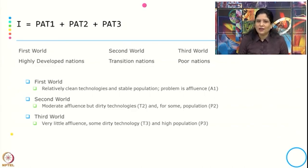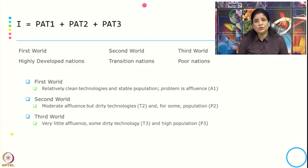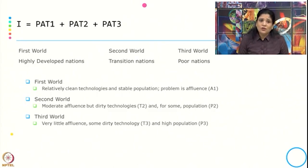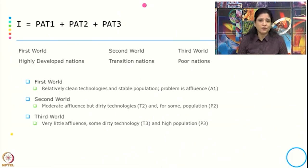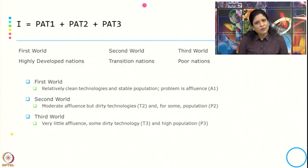In the first world, the features are relatively clean technology and stable population, but the impact comes from affluence because there is advancement in technology — they are not using dirty technology and their population is more or less stable, so the problem is affluence. In the second world, there is affluence due to income growth for at least a few groups, but they do not use clean technology, so the impact comes from technology and partly from population growth. For the third world, affluence is not a problem — there is very little affluence, some dirty technology, and high population.